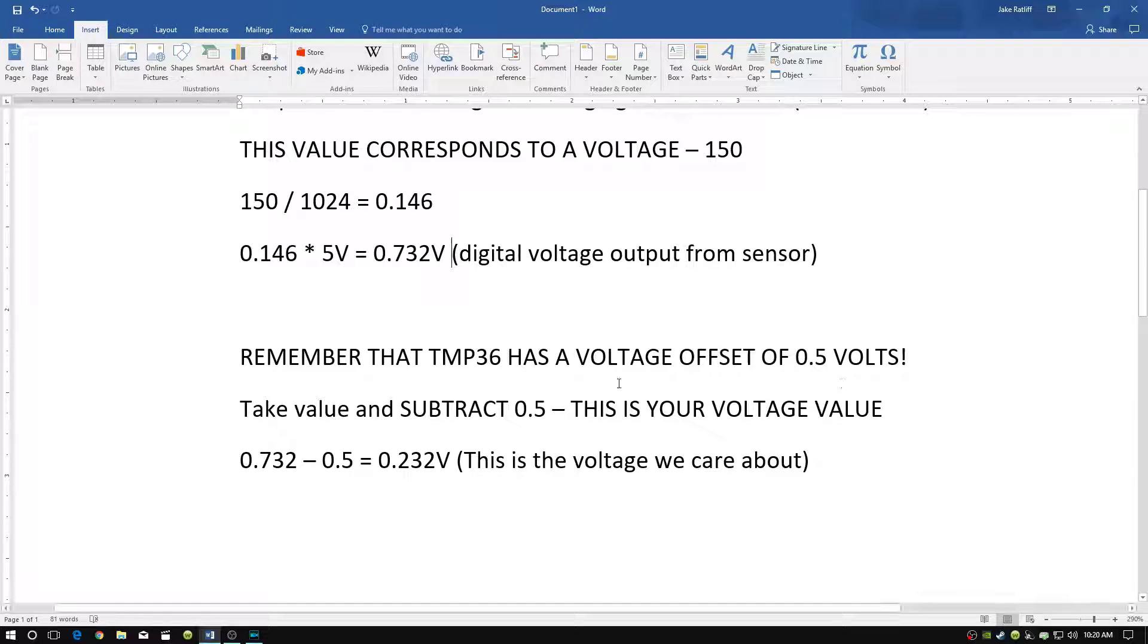So what we need to do is take our value, which was 0.732 volts, and subtract 0.5 volts. And this is going to be our voltage value. So you can see right here, 0.732 volts minus 0.5 volts gives us 0.232 volts. And this is the voltage that we care about. This is the one that we need in order to calculate the temperature.